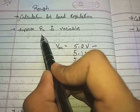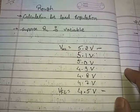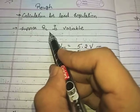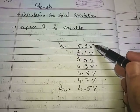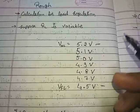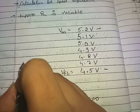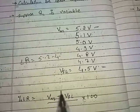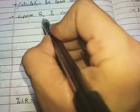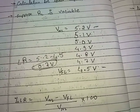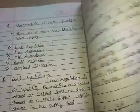Load regulation states that in any condition, whatever load is applied to the power supply, the output should not vary — in ideal conditions. But we know that whenever we put any resistor or load across the terminal, the voltage drops. Here it dropped from 5.2 to 4.5 volts. This drop should be as small as possible. In this case my load regulation is 0.7 volts, and for a good power supply this value should be minimized as much as possible.